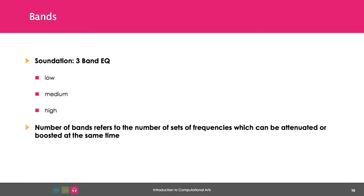Soundation is an example of a three-band EQ. There are only three controls: low, mid, and high. The number of bands refers to the number of sets of frequencies which can be attenuated or boosted at the same time.